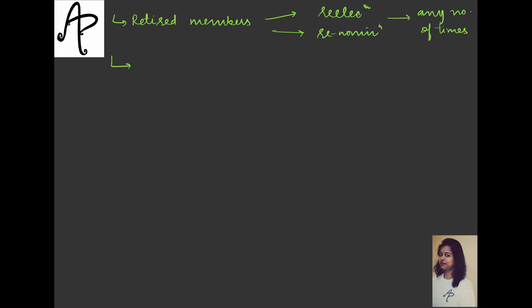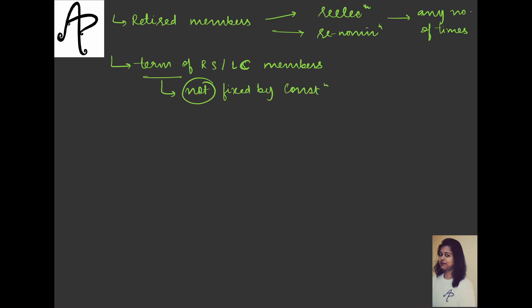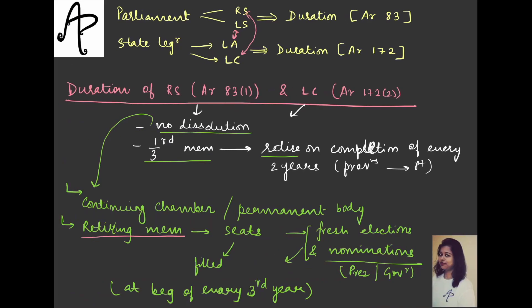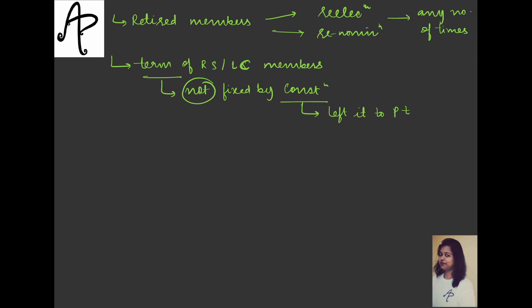Another thing to note is that the term of Rajya Sabha or Legislative Council is not fixed by the constitution. The constitution only says one-third of the members shall retire, and it is leaving it to Parliament - everything has to happen with respect to provisions which Parliament will make by law. The constitution has not fixed it; it has left it to Parliament.